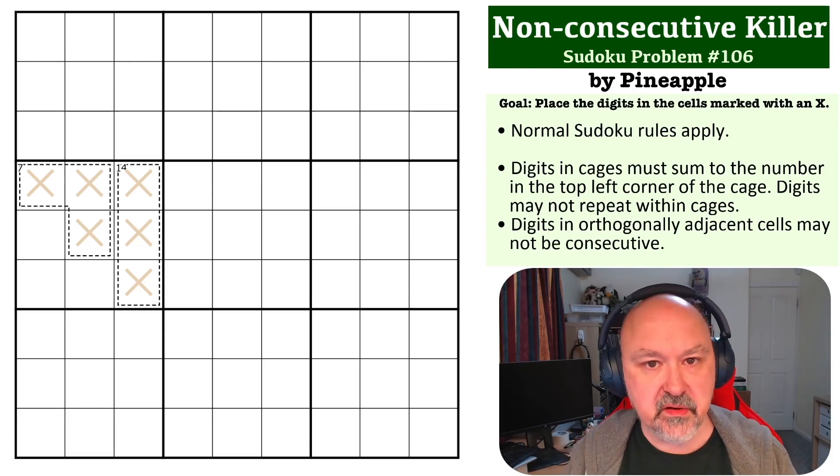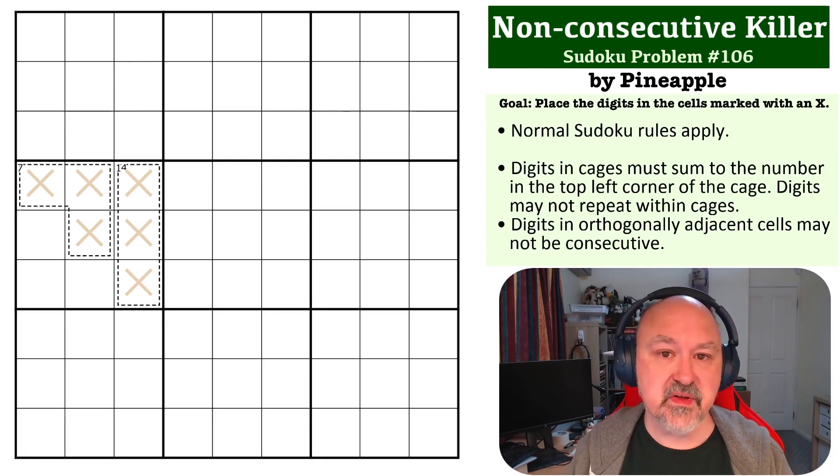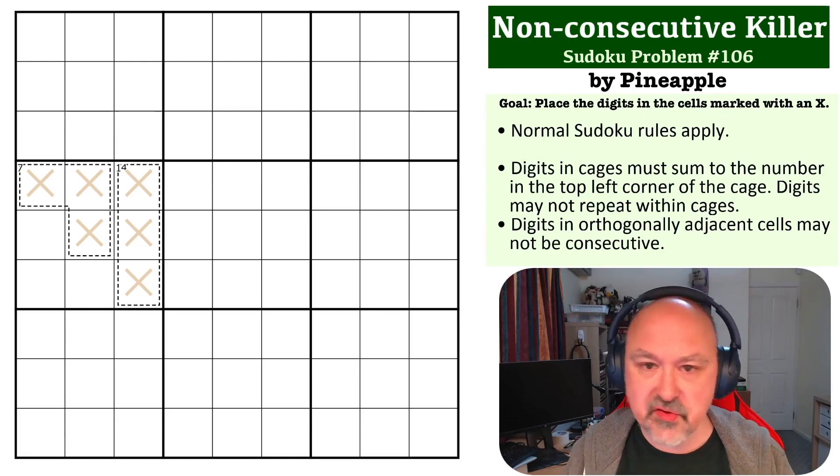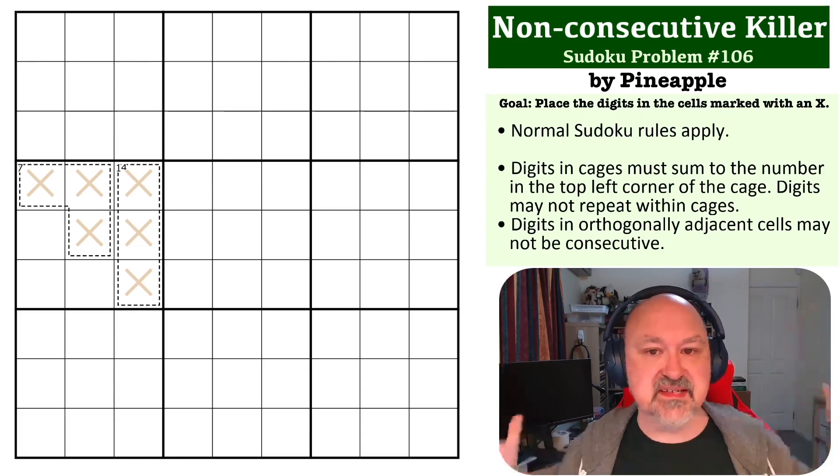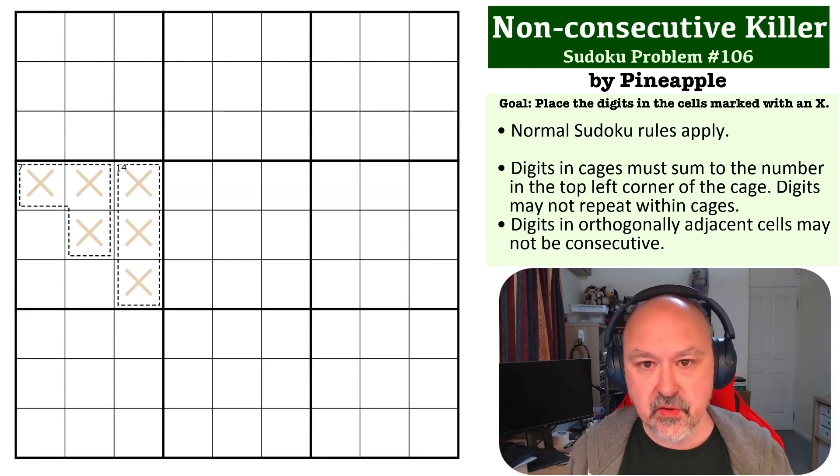There's a link below to where you can get a copy of this to try yourself, and the goal on this one is to place the digits in all of the cells marked with X's. It's important to note that you do not need to place any other digits. None of the other cells exist in this one, so just focus on those.